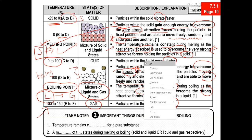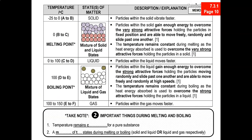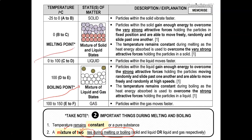There are two main takeaways from this slide. First, the temperature remains constant for a pure substance. Secondly, during melting and boiling — the processes where a change of state happens — there is a mixture of two states. Please be very careful: if asked to draw a diagram during boiling or melting, make sure you draw two states, and if asked to name the states present, make sure you give both answers.